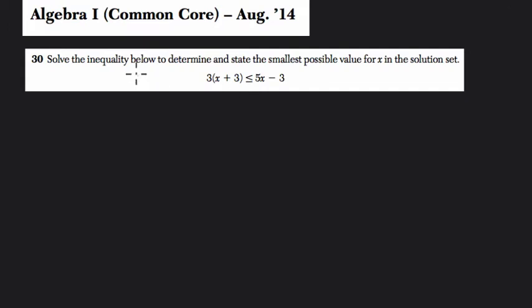Let's start by reading this problem. It says, solve the inequality below to determine and state the smallest possible value for x in the solution set. So basically solve for x. We have 3 times x plus 3 is less than or equal to 5x minus 3.